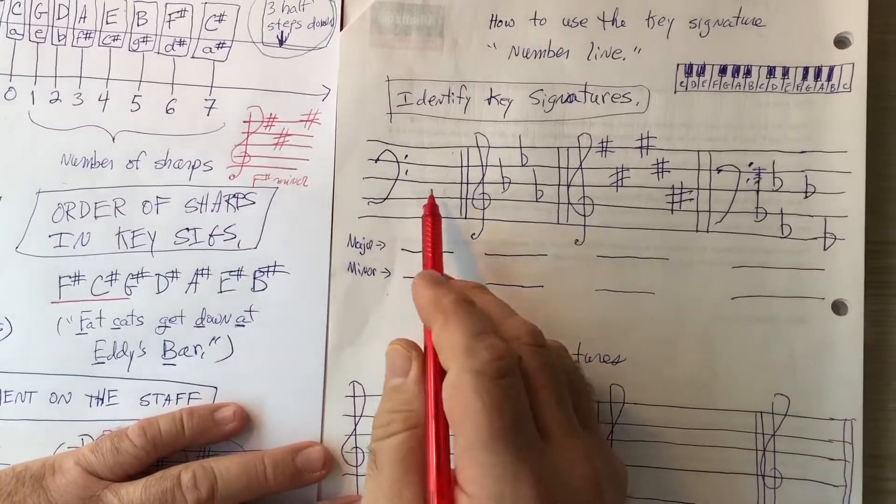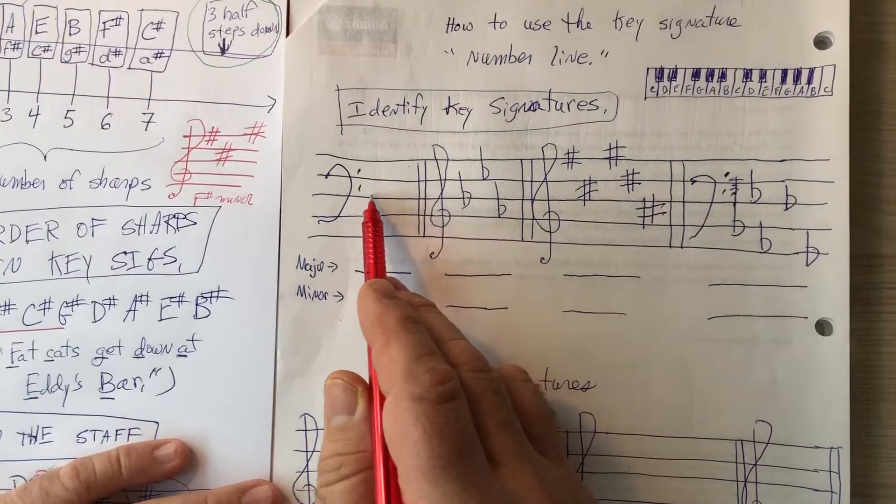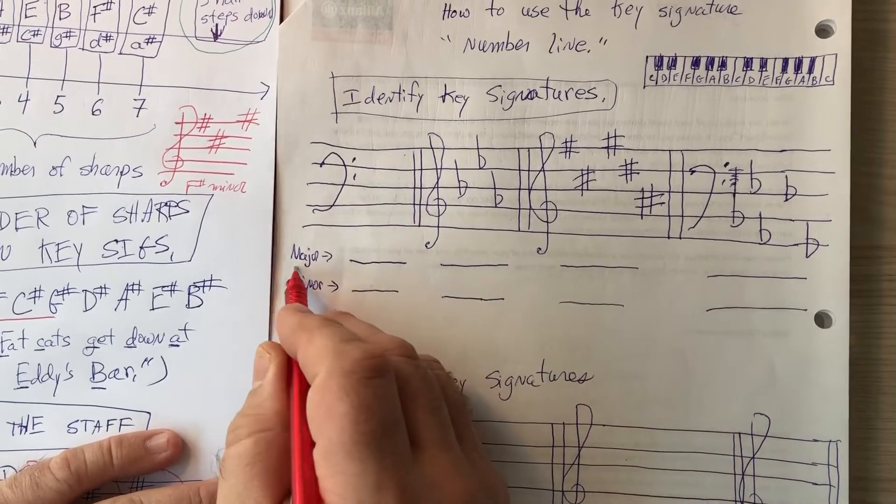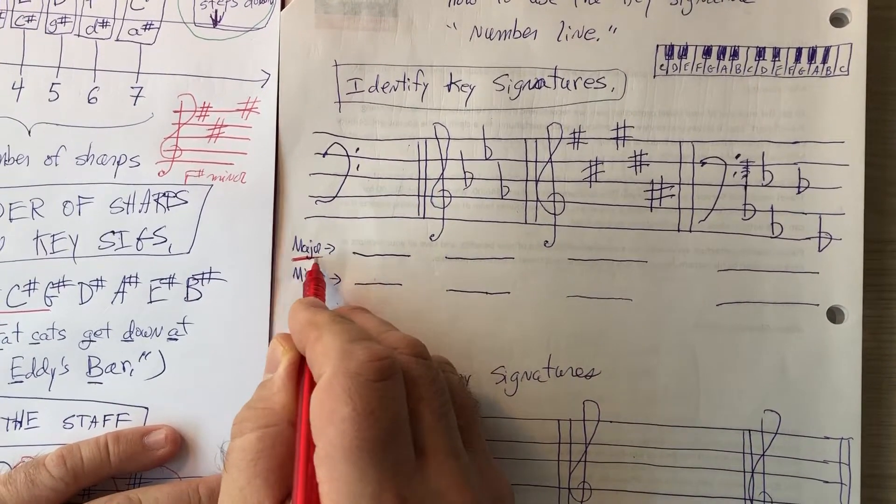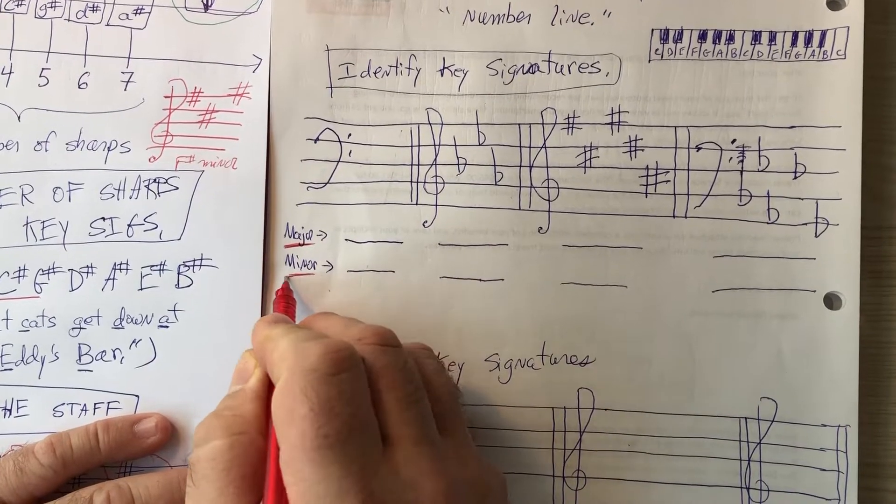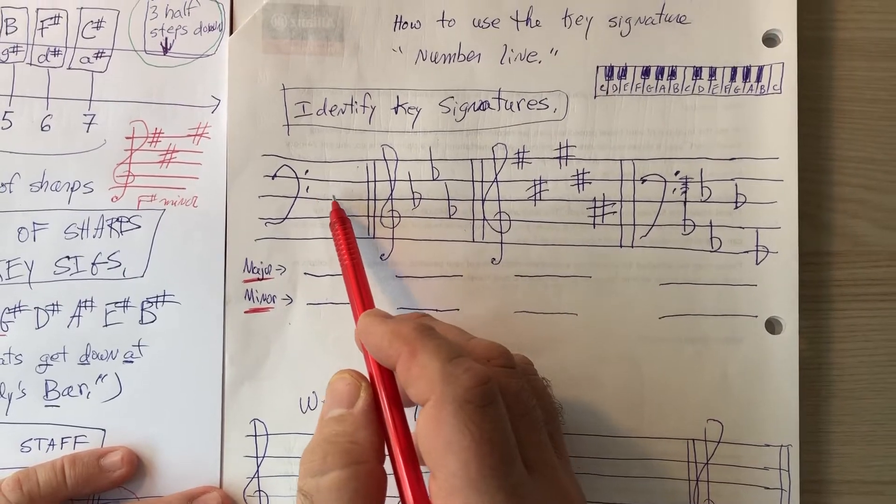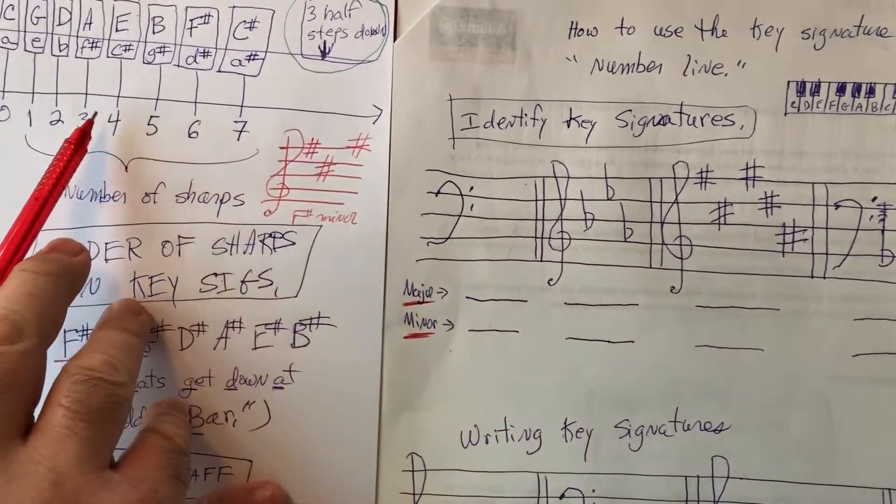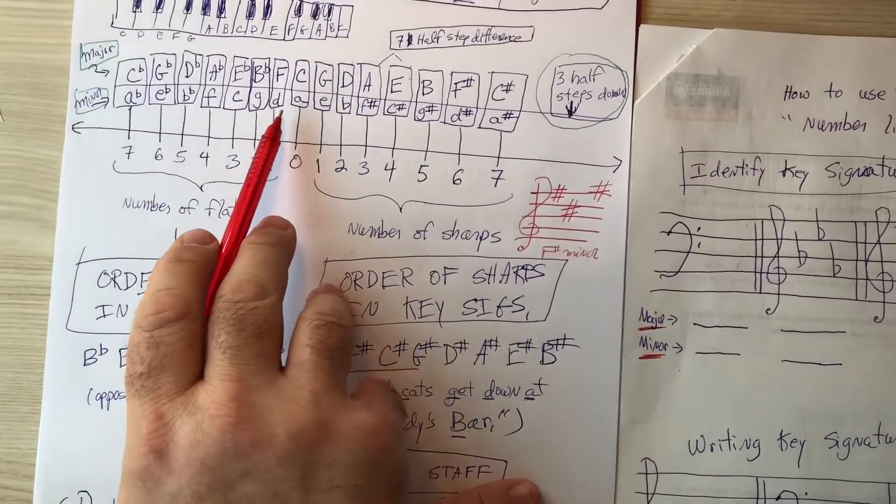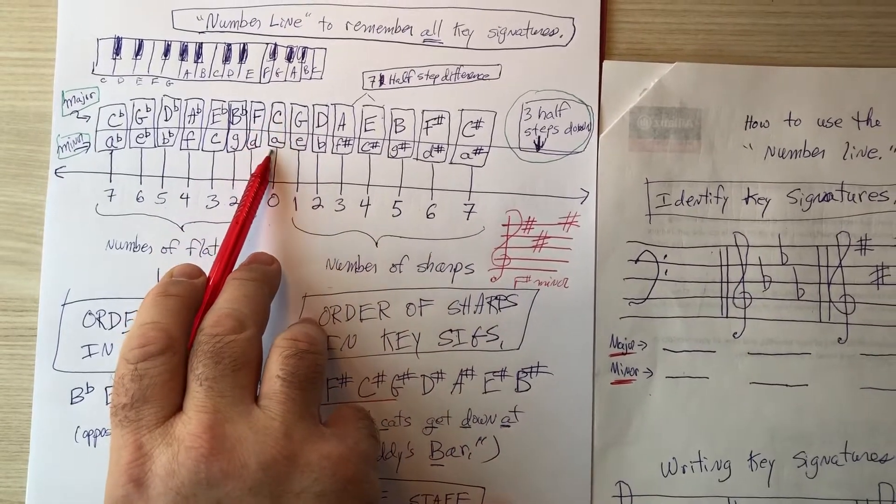So here we go. This key signature has no sharps and no flats and I'm asking you to tell me what major key this could be and what minor key this could be. Since there's nothing in it, of course it's zero. We come down to our numbers, we find zero. So you see that could be C major or A minor.